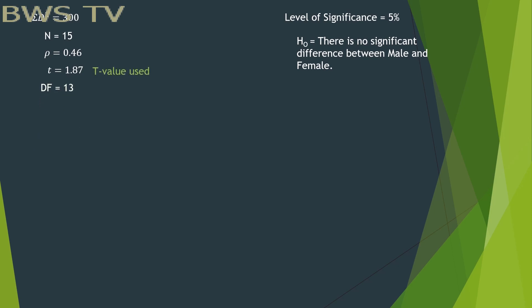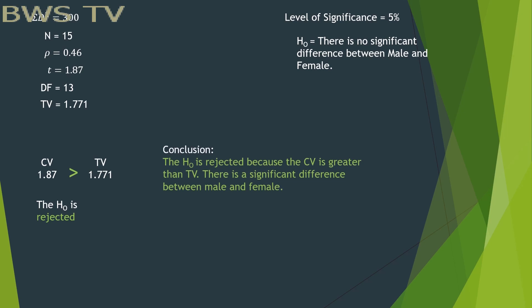Since t-value is used, we will use the table for t-value. In here, the CV is greater than TV, meaning the null hypothesis is rejected. Our conclusion would be the H0 is rejected because the CV is greater than TV. There is a significant difference between male and female.